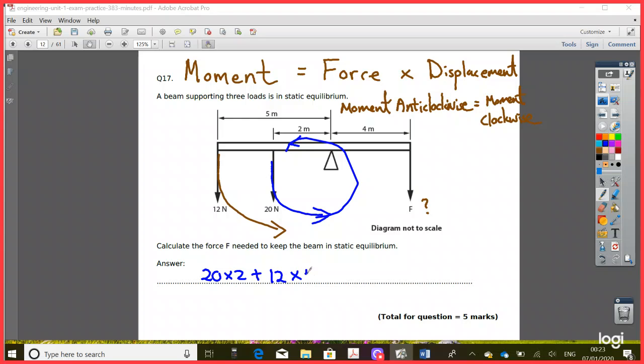And that equals the clockwise moment, which is force times distance. Okay? So therefore the force is equal to... if I just solve this, that's 20 times 2, 40, and then 12 times 5 is 60. That's 100.